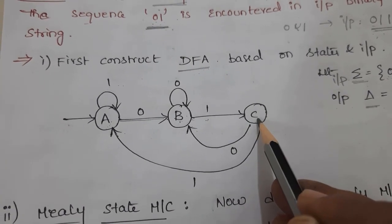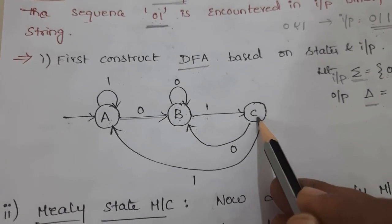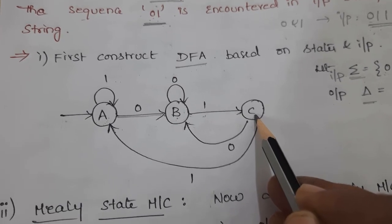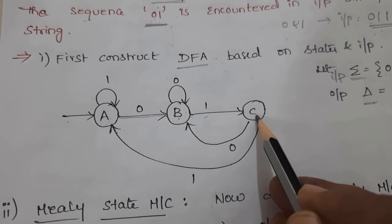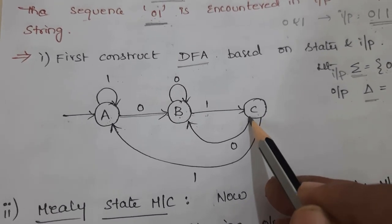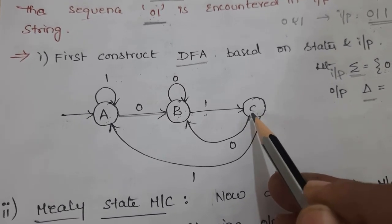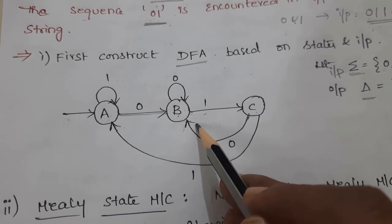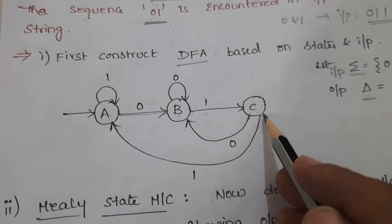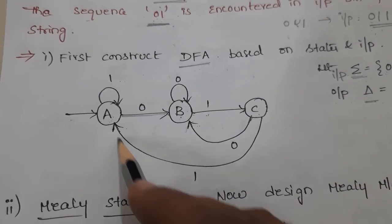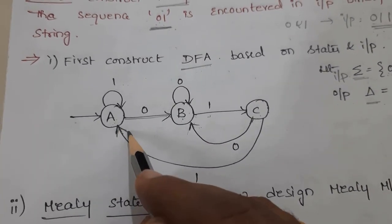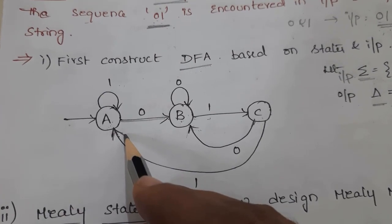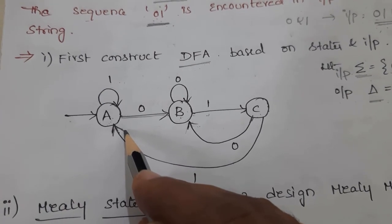At state B, if 0 is the input, it stays in state B. If 1 is the input to state B, it moves to state C. At state C, if 0 is the input, it goes back to state B, and if 1 is the input, it goes back to state A.